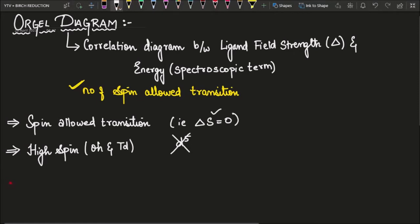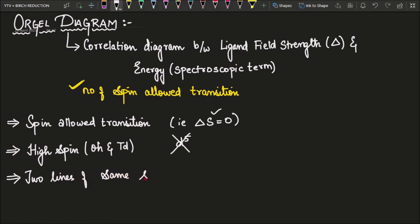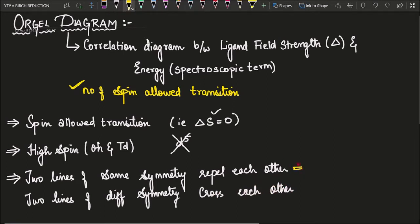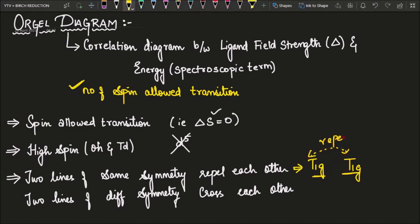One more point: when you have two spectroscopic lines of the same symmetry, they will repel each other. On the other hand, when you have two spectroscopic lines of different symmetry, they will cross each other. For example, if one spectroscopic term is T1G and another is also T1G, they will repel each other. But if one is A2G and the other is T1G — different symmetry — they can cross each other.